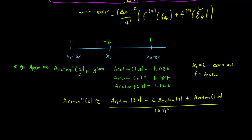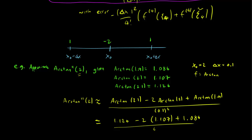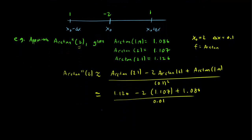This gives us 1.126 minus 2 times 1.107 plus 1.086, all over 0.01. When you do the calculation, you end up with negative 0.200. So that's our estimate for the second derivative of arctan at 2.